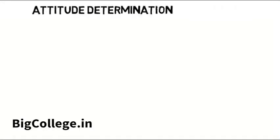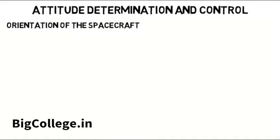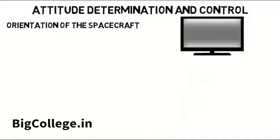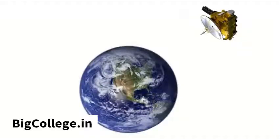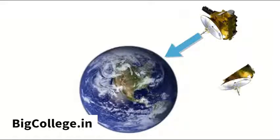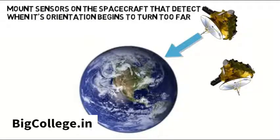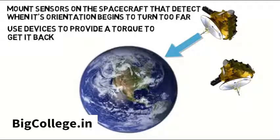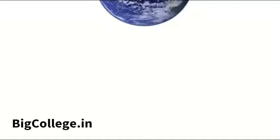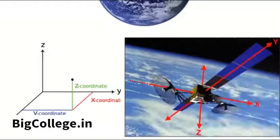Attitude determination and control is all about controlling the orientation of the spacecraft. Think about the fact that you have to aim a remote control at or near a TV to turn it on — if you just turn or orient it a different way, then it won't work. The same thing goes for a spacecraft orbiting Earth. It may have an antenna on it that has to point at something on Earth to communicate with us. If along its orbit it turns too far, the antenna may not be able to communicate, just like the remote control couldn't communicate with the TV. We can mount sensors on the spacecraft that detect when its orientation begins to turn too far, then use devices to provide a torque to get it back to the required orientation. In classes, this involves a lot of looking at coordinate systems and different axes to determine how a spacecraft is oriented mathematically.